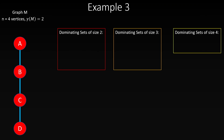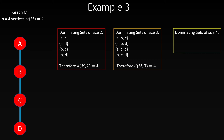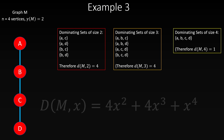As our final example, let's find the domination polynomial of graph M, a path graph with four vertices and domination number two. There are four dominating sets of size two, so d(M,2) = 4. There are four dominating sets of size three, so d(M,3) = 4. Finally, there's one dominating set of size four, so d(M,4) = 1. That means this is our domination polynomial.